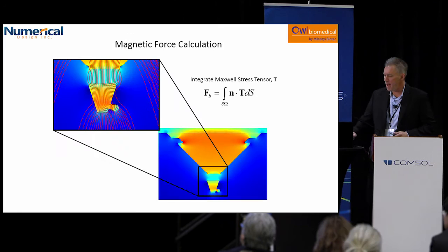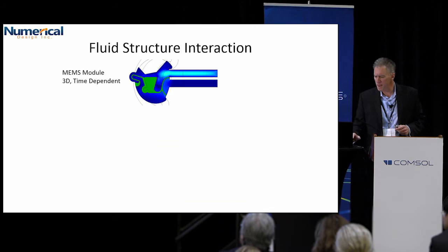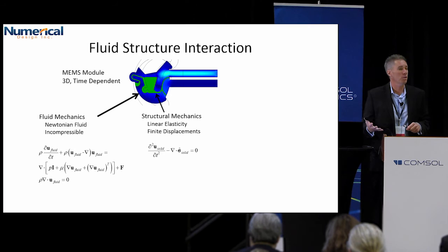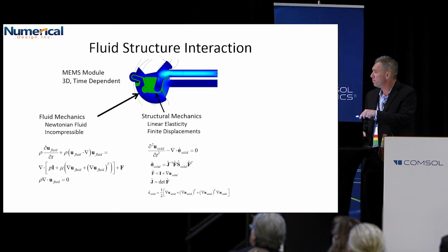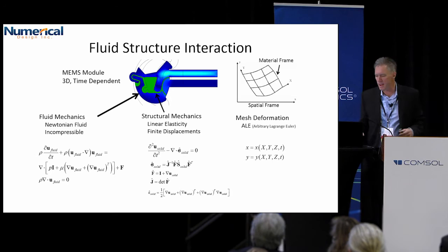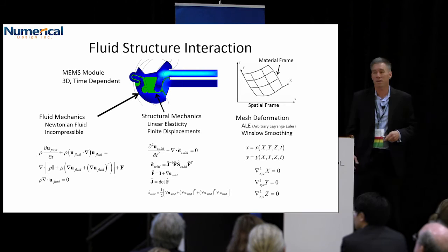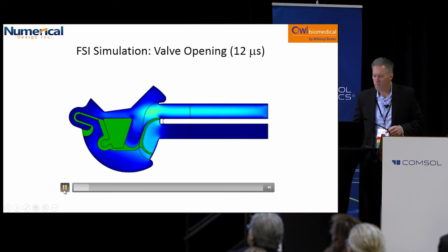From the magnetic field, we integrate the Maxwell stress tensor and calculate the forces on the actuators as a function of distance. Once we know the forces, we do the fluid-structure model: solve the Navier-Stokes equations and the structural dynamics equations. It's a very dynamic problem so we need to keep the inertial term. It's also a nonlinear large-displacement problem, plus the moving mesh, all coupled together using a Winslow solver. We solve all these equations simultaneously using a direct solver. The typical mesh has nearly a million degrees of freedom, and it's very important to get the mesh just right.